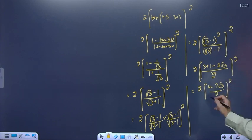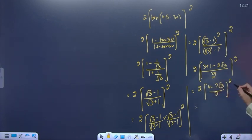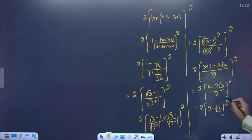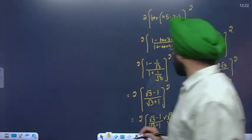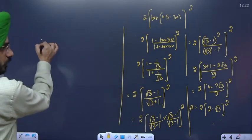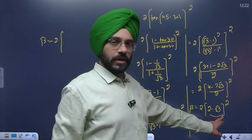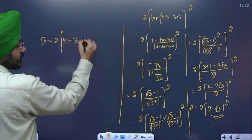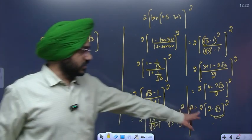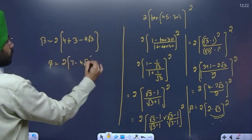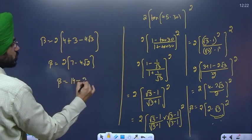Poori term ke upar scale aayega. Final term bachegi: 2·(4 - 2√3)/2 = 4 - 2√3. Isme se 2 common aata hai: 2(2 - √3). Square karoge: a - b whole square formula se 4 + 3 - 4√3. So beta = 2·(7 - 4√3).